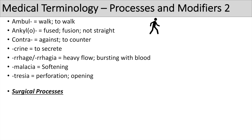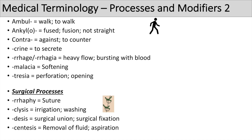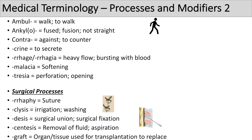Now we're going to talk about surgical processes, which are always important to know. The suffix 'rrhaphy' means suture. The suffix 'clysis' means irrigation or washing. The suffix 'desis' means surgical union or surgical fixation. The suffix 'centesis' means removal of fluid or aspiration. And the suffix 'graft' means an organ or tissue used for transplantation to replace something else.